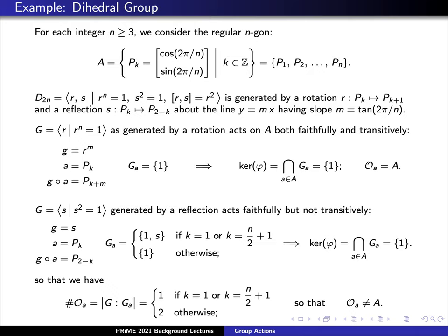Using this, if we consider now the intersection over all stabilizers, we see that the kernel of phi must be the trivial subgroup. This is, yet again, the reason why the action of G on the vertices must be faithful. Now, we can consider the orbit of our action. Recall that we found before that the number of vertices in our orbit depends upon the index of the stabilizer in the entire group. Since we've already determined the size of the stabilizer, we can put this together to see that we have an orbit of exactly one point if either k is equal to 1 or k is equal to n over 2 plus 1. Otherwise, we have two elements in our orbit.